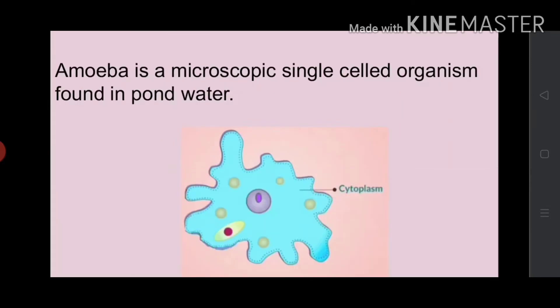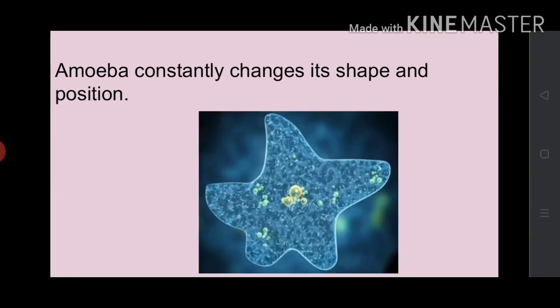Have you heard about amoeba? It is a microscopic single-celled organism found in pond water. What is the meaning of microscopic? It is a very small organism that we can see only with the help of a microscope. We cannot see this microorganism with our naked eye. Amoeba do not have a fixed shape. It can constantly change its shape and position.